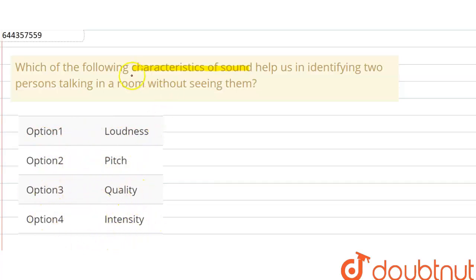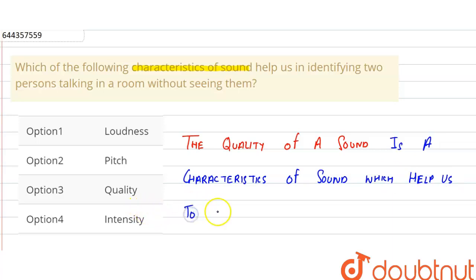So we know that the quality of a sound is a characteristic of sound which helps us to identify two persons